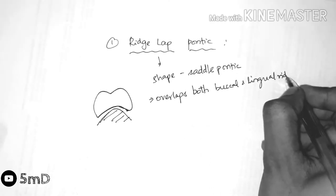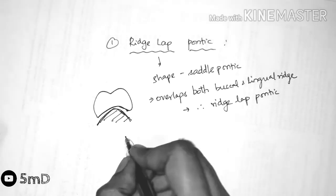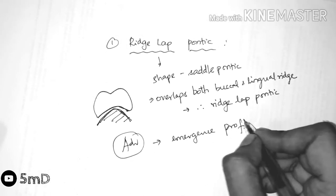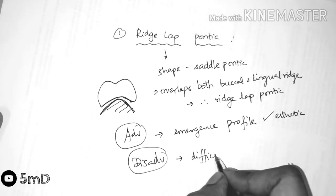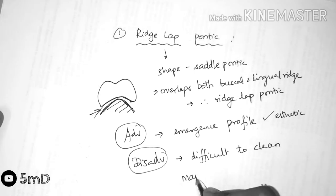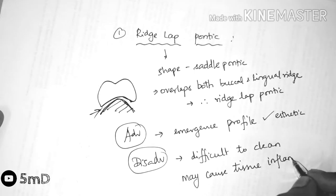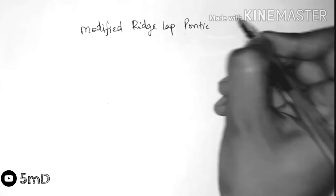The main advantage of this ridge lap pontic is that it imitates the emergence profile of missing teeth. But the disadvantage is that it is difficult to clean because of the snug fit, and sometimes it could impinge on the ridge and cause tissue inflammation.